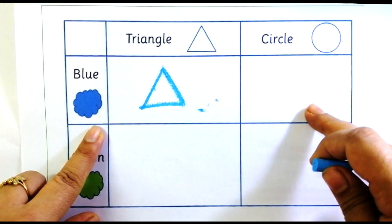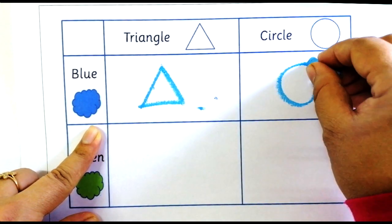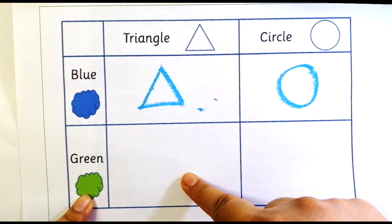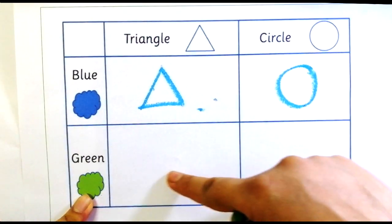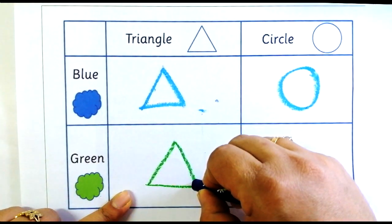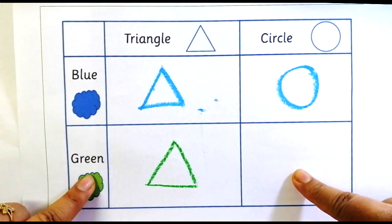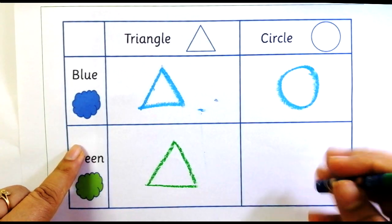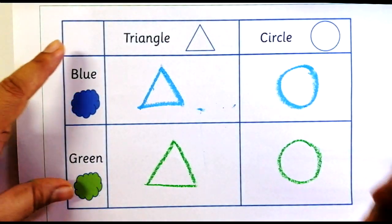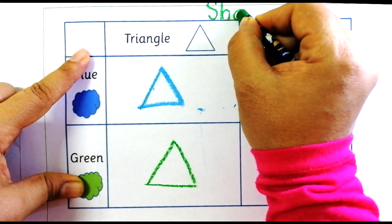When you come to this box it says blue circle, so let me draw a circle. Now let's come to this next box — it says we need to have a green triangle, so let's draw a green triangle. This box says we need to have a green circle, so let's draw a green circle. And let's give a suitable title to it — I can call it Shapes.